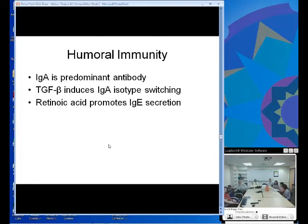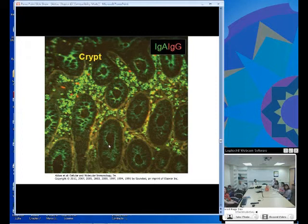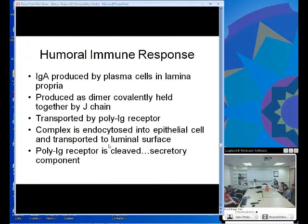IgA is the predominant antibody in the GI tract. TGF-beta induces IgA isotype switching, and retinoic acid can also promote some IgA secretion. This is a stain for IgA in green and IgG in red. IgG is present, but IgA is one of the most important antibodies secreted in the gut.